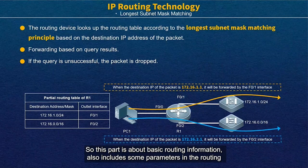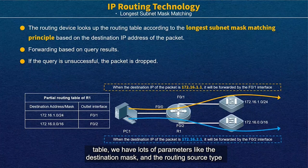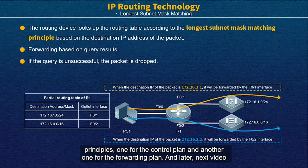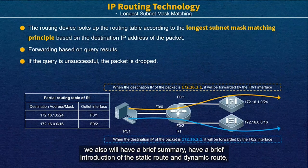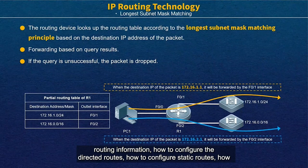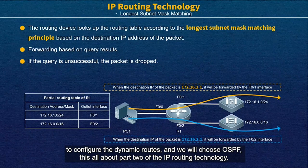So this part is about basic routing information, including parameters in the routing table such as destination, mask, routing source type, administrative distance, and so on. We also talked about two very important principles — one for the control plane and another for the forwarding plane. In the next video, we will have a brief introduction of static routes and dynamic routes. Later we will have detailed videos covering how to configure direct routes, static routes, and dynamic routes — we will choose OSPF. That's part two of the IP routing technology.